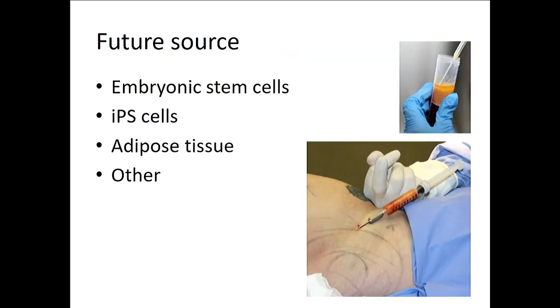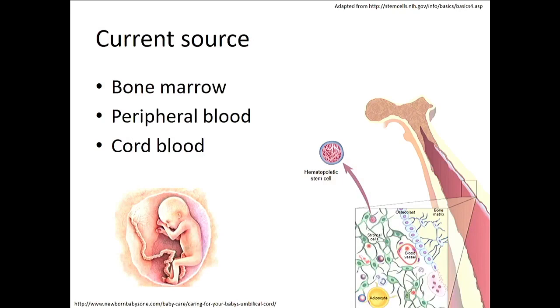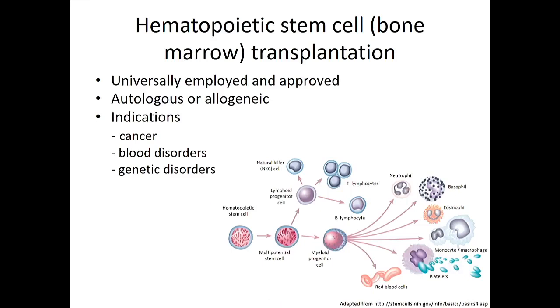Now, I did mention to you that these are the three current sources of stem cells. And how are they used? Well, they're being used all over the world in a procedure that's been going on for more than 50 years, probably for about 35 in South Africa, called bone marrow transplantation. It's usually given to people who have cancer, but can also be used for people who have blood and genetic disorders.